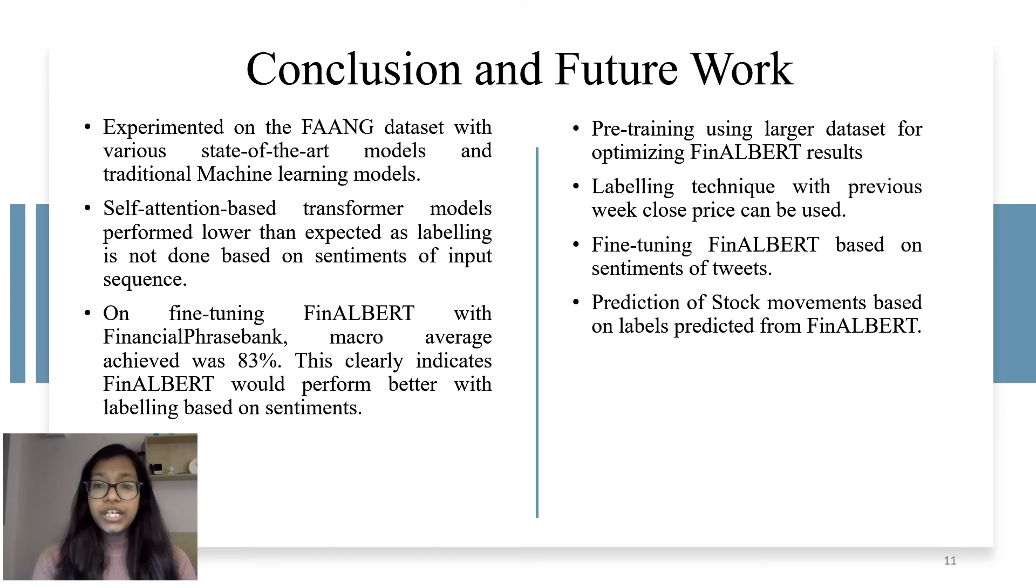Currently, due to hardware limitations, pre-training is done using the small dataset. If pre-training is done using a larger dataset, we will be able to create a bigger vocabulary which in turn would help us optimizing the FinALBERT results. We've experimented with different learning rates for one-year data of FANG companies. Also, currently, we were not able to experiment much with different epochs, but if the number of epochs is increased for fine-tuning, high results can be achieved.